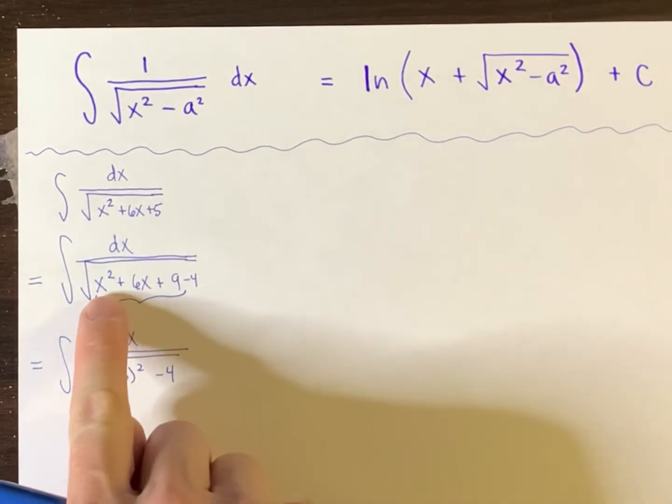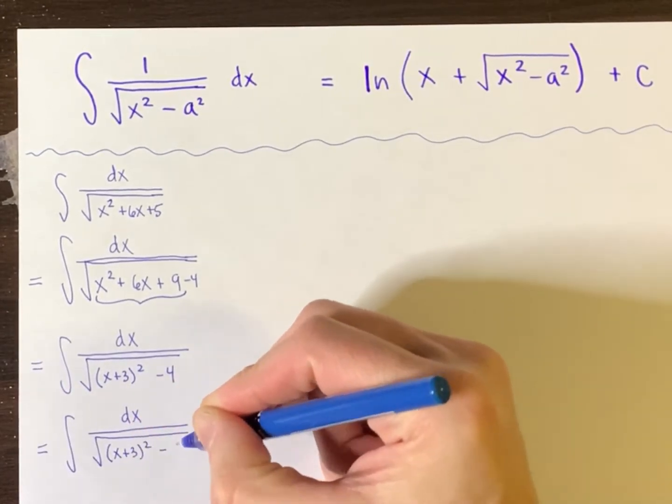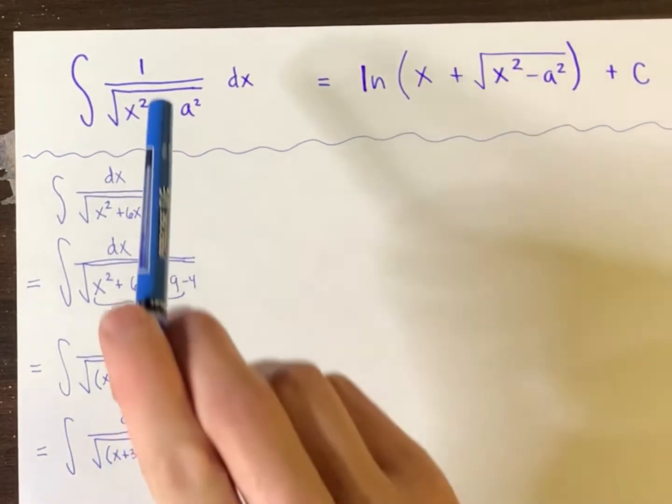You see that? You see how this is the same as that? And so we have four, but four is the same as the square of two. And so we really do have this looking exactly like that.